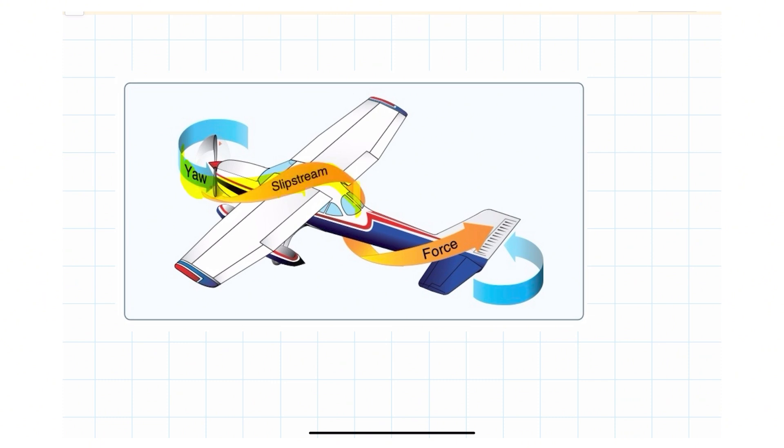So as it spirals around the airplane, it actually hits the vertical fin on the left side. When it hits it on the left side, it causes the airplane to want to yaw to the left. So it hits the left side behind the center of gravity causing the airplane to yaw to the left.